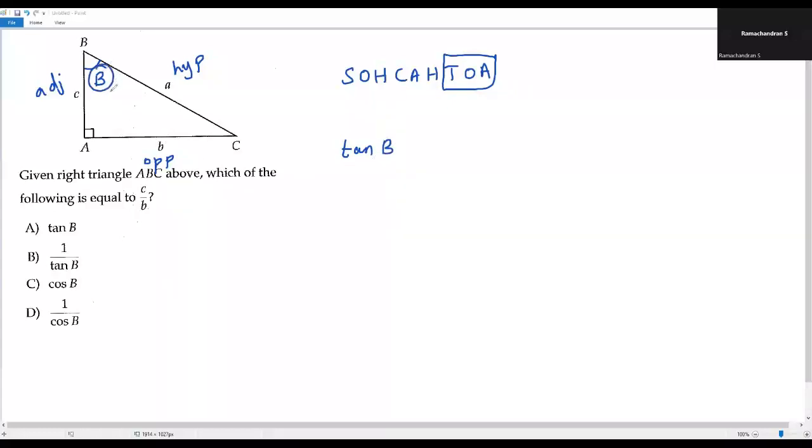If I consider this angle measure B, then opposite side is lowercase B and the adjacent side is lowercase C. So now I got tangent B is equal to lowercase B by lowercase C. But in the question, we have C over B. They asked us to find the one which is equal to C over B, but we got the result for B over C.